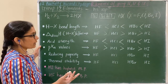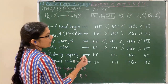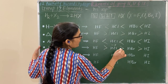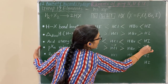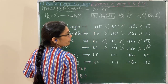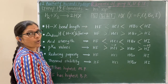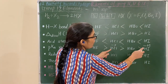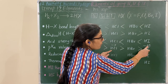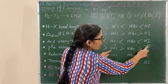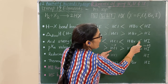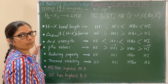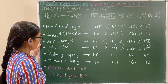For example, a question may ask: if the pKa value of HCl is −7 and for HI it is −10, which is the stronger acid? For HI, the pKa value is smaller, therefore its acid strength is greater. Smaller the pKa value, greater is the acid strength.